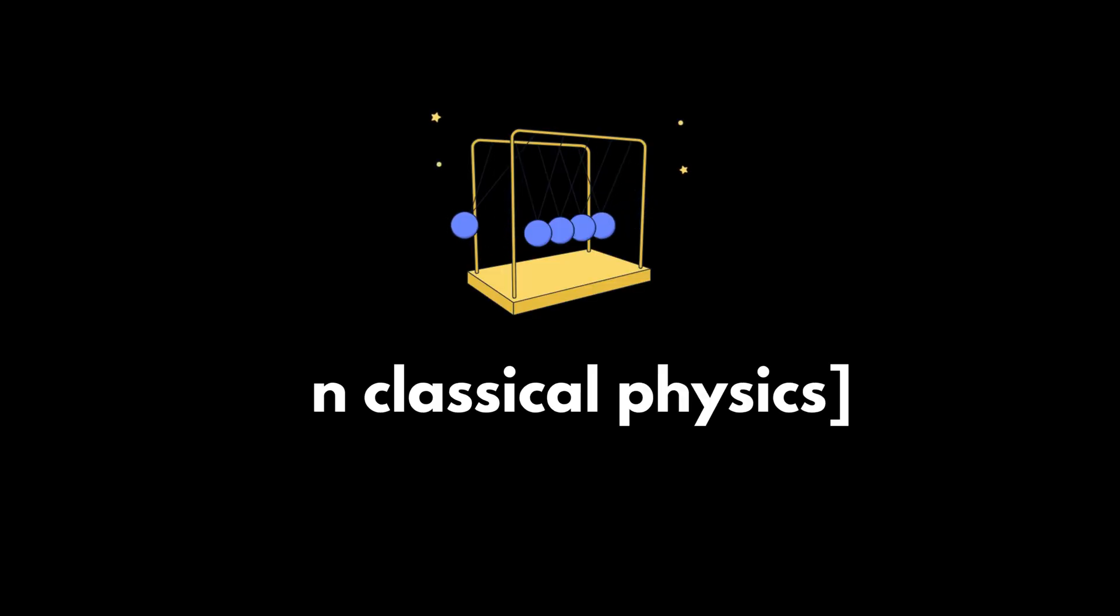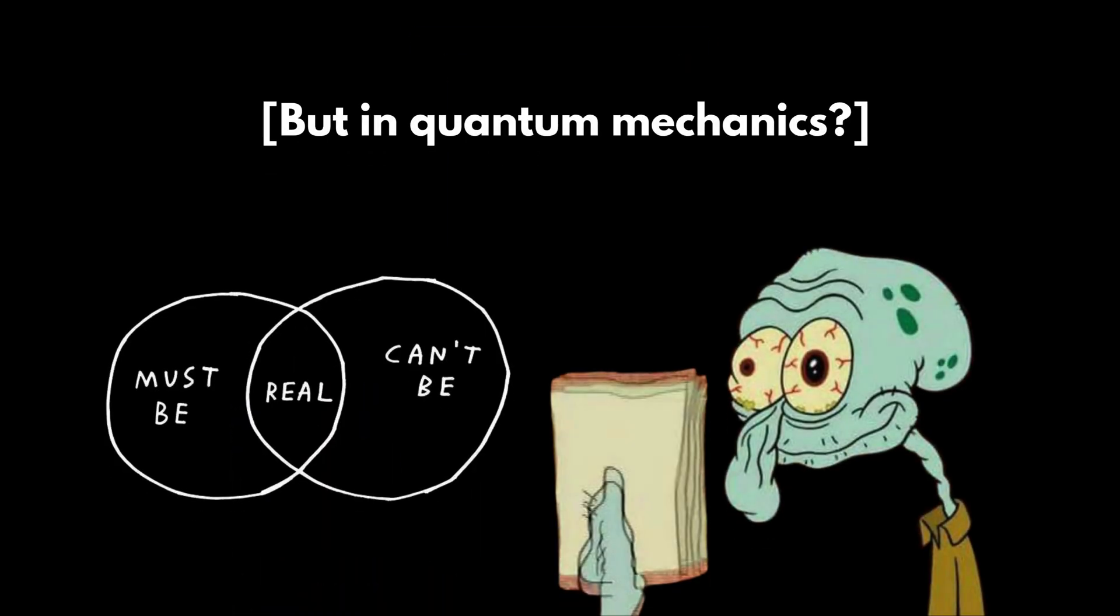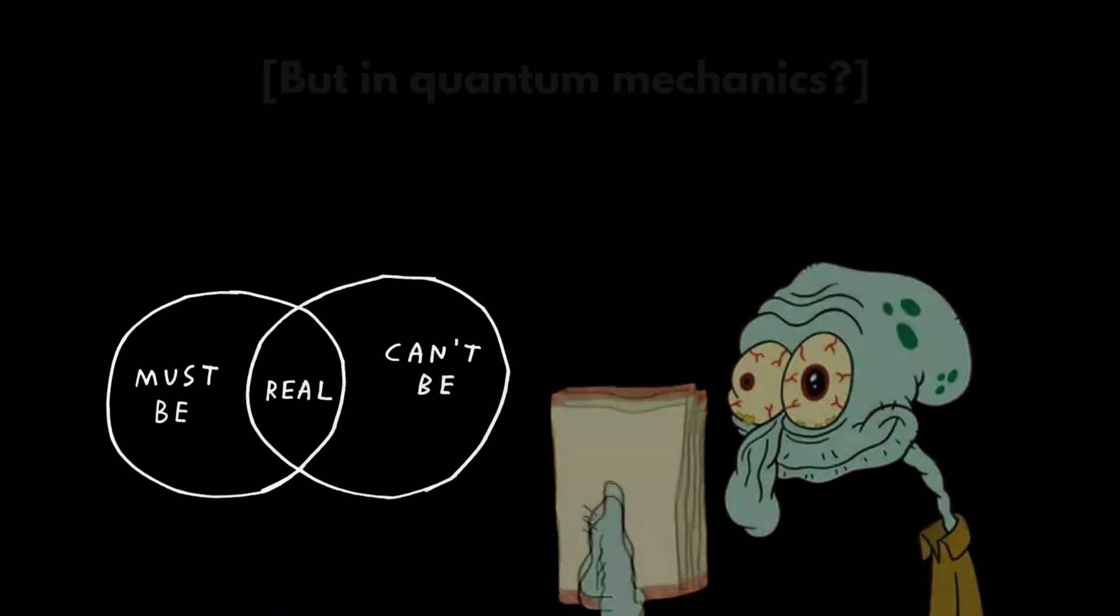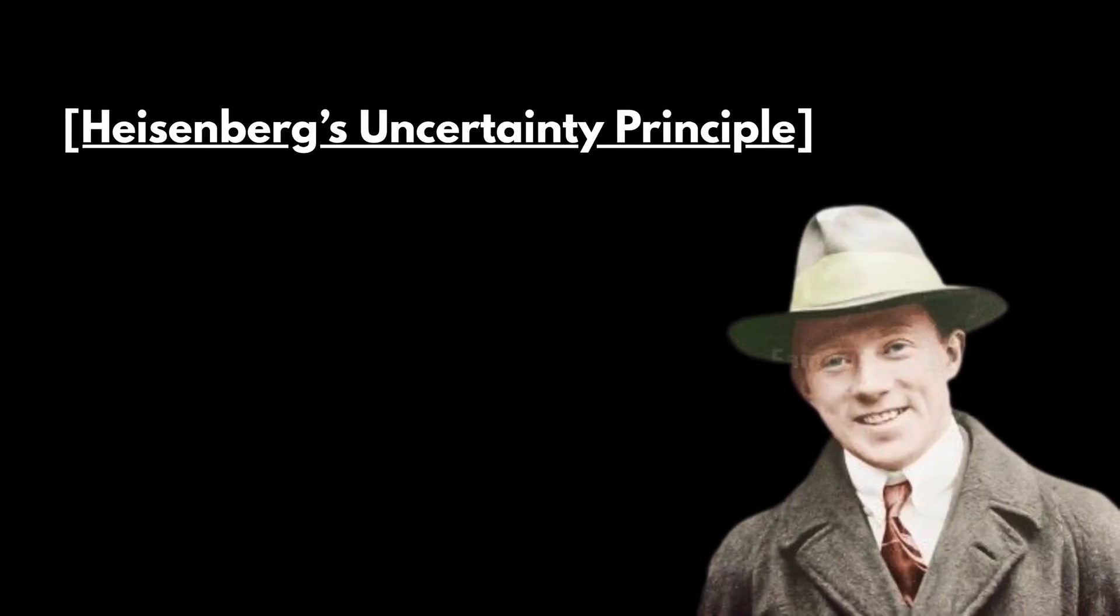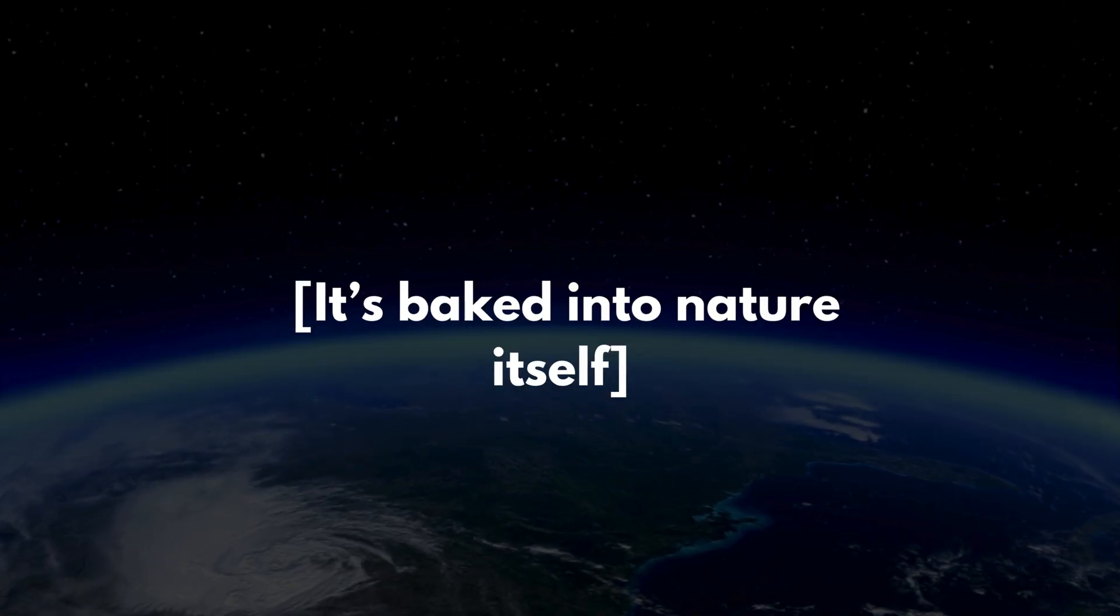In classical physics, you can know where something is and how fast it's moving. No problem. But in quantum mechanics? Not so easy. Heisenberg's uncertainty principle says the more precisely we know a particle's position, the less precisely we can know its momentum and vice versa. It's not a limitation of our tools. It's baked into nature itself.